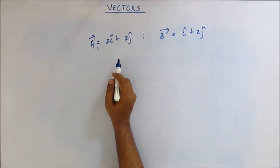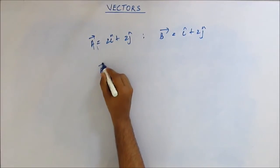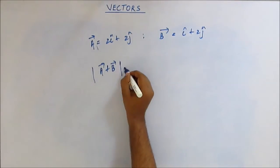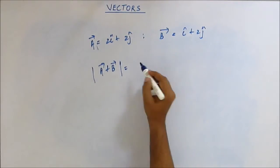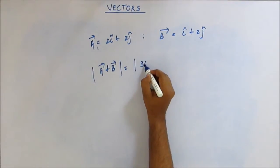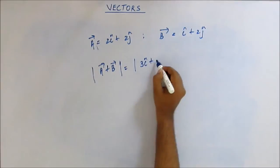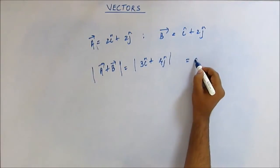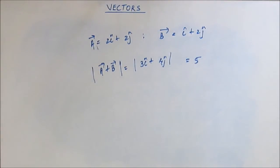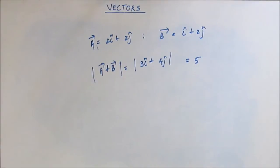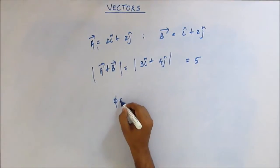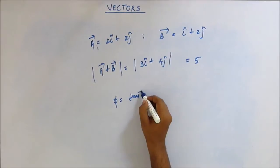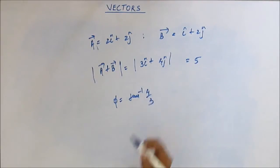Try to do it orally because it's pretty simple. The magnitude of the summation is basically the magnitude of 3i-cap plus 4j-cap. You should have no trouble finding that it is 5. And the angle φ which this makes would be tan inverse of 4 by 3.